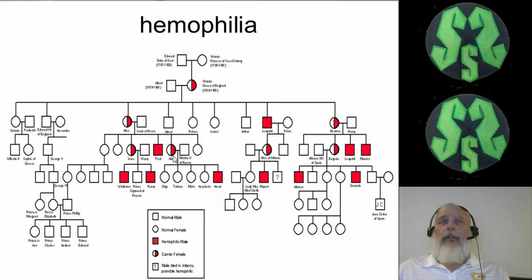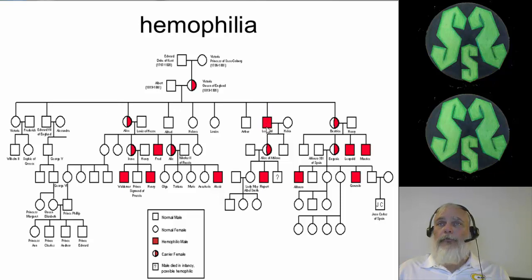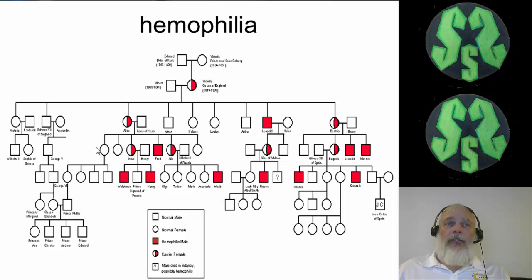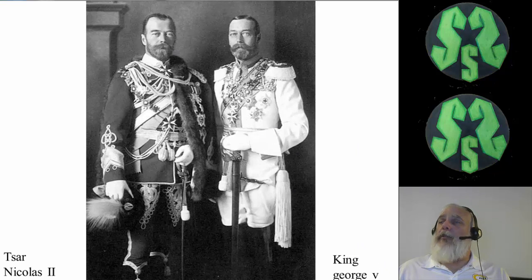None of the girls were affected, but several could be carriers. Some of the names on this pedigree include Queen Victoria of England, her daughter Alice, her son Edward VII who was king of England, daughter Victoria, son Arthur, daughter Beatrice, and so on. The more related people are, the greater the chances are that these genes will appear in their family. For example, Tsar Nicholas on the left and King George V on the right look almost like twins — they're not, but they're closely related, as you can see through that pedigree.